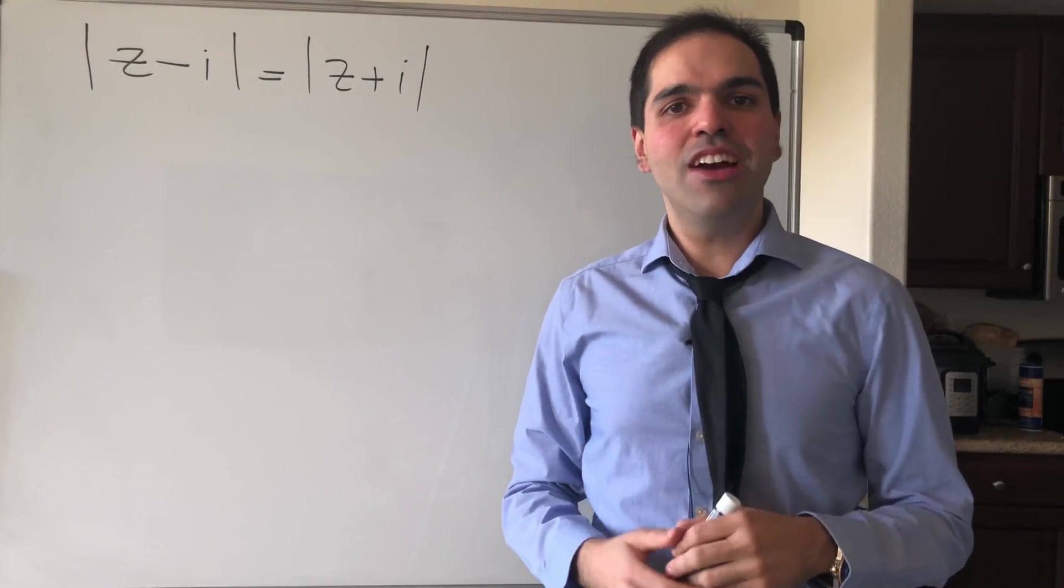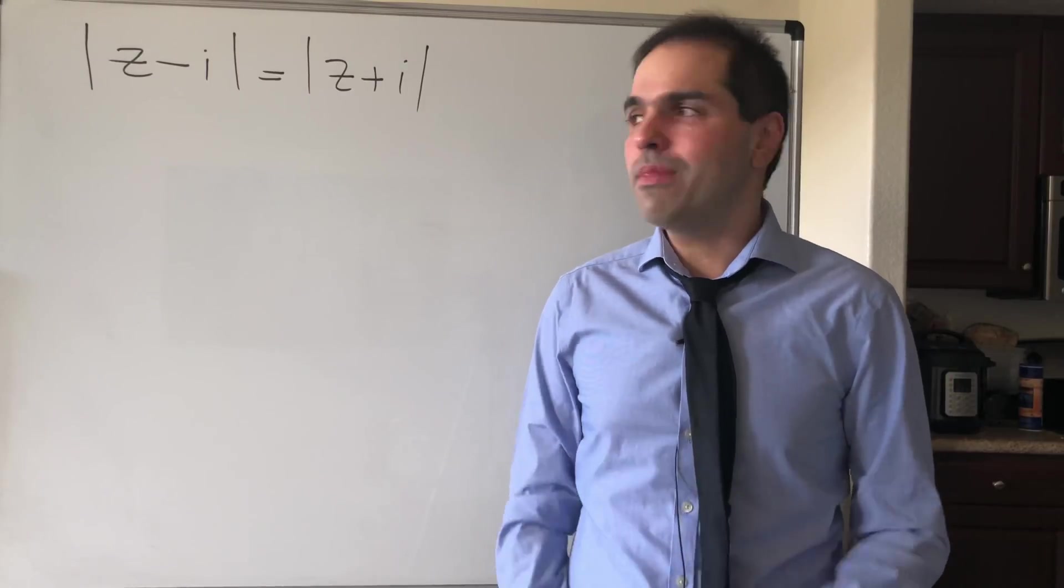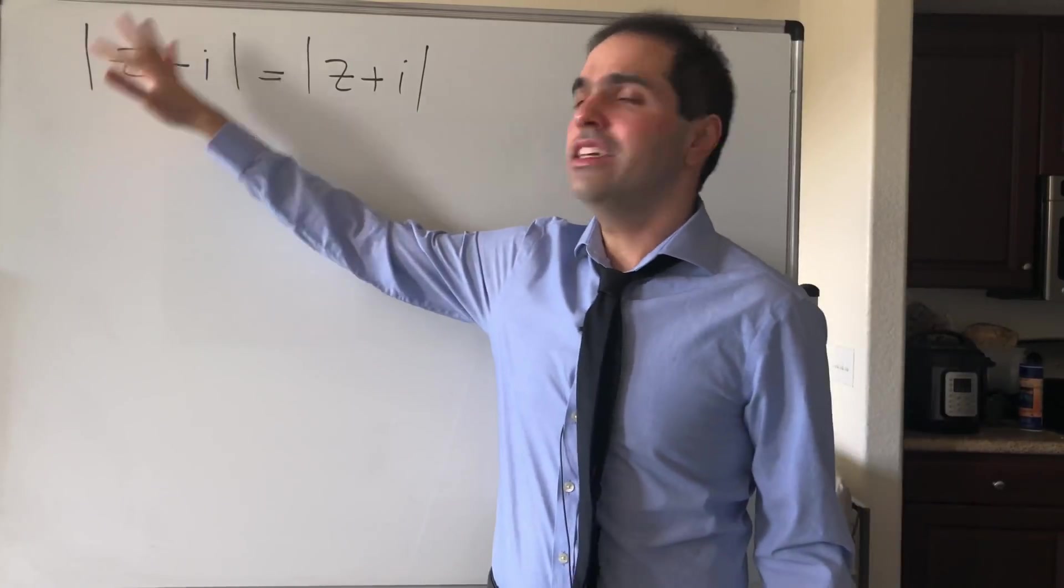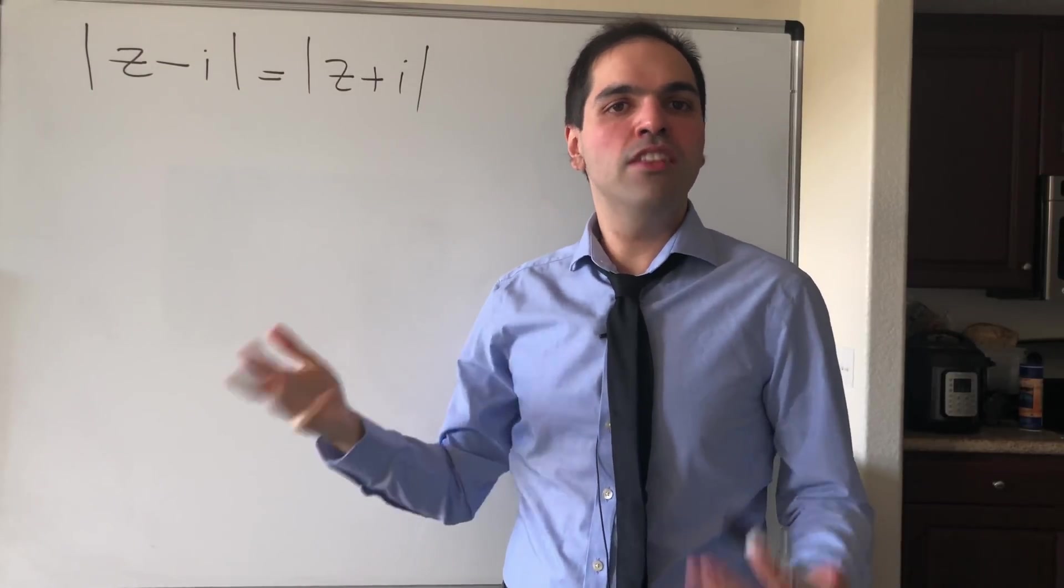All right, thanks for watching. Today I would like to solve a neat problem involving complex numbers. Namely, find all the numbers z such that absolute value of z minus i equals absolute value of z plus i.